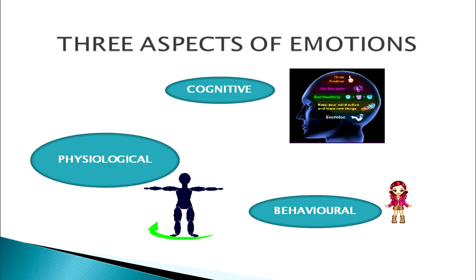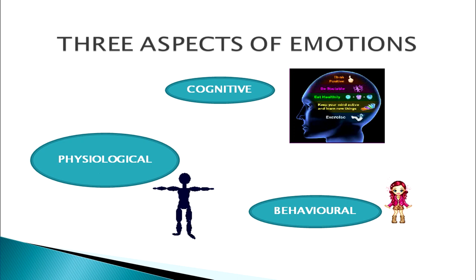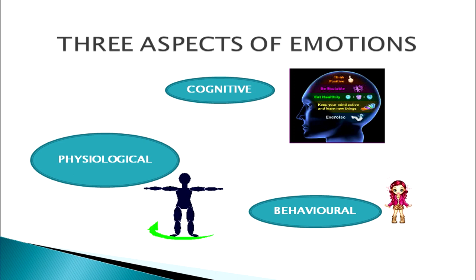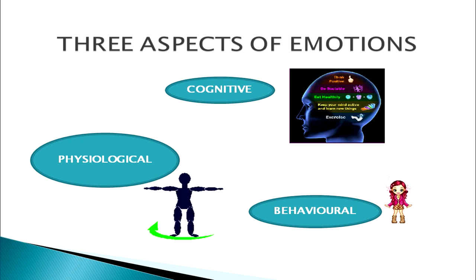Let us discuss what these three basic aspects are. These are the cognitive aspect, the physiological aspect, and the behavioral aspect. That is, whenever we are under an emotion, how the thought process works, how the body reacts to it, and how we behave under the influence of emotions.